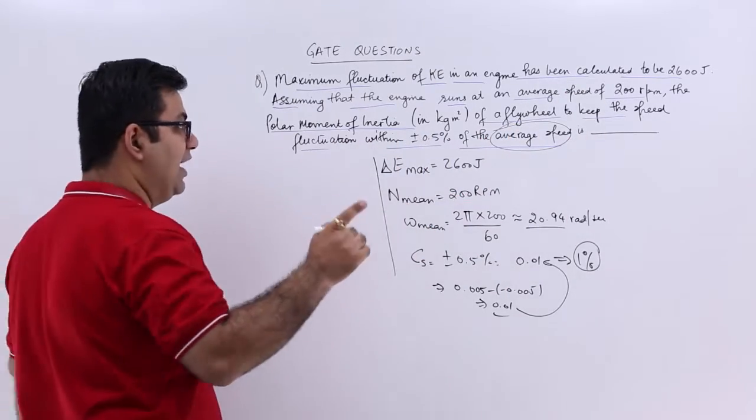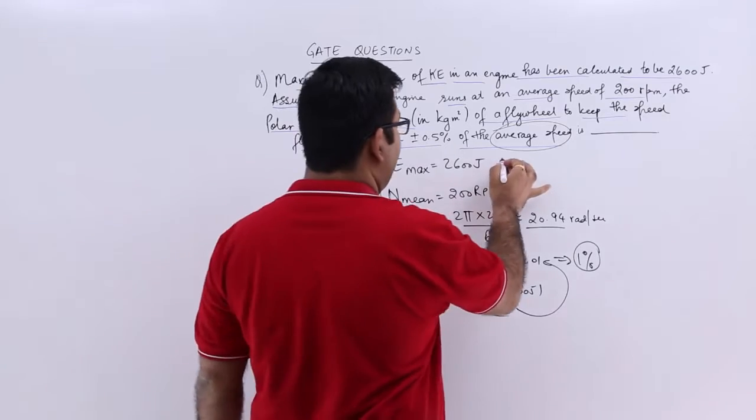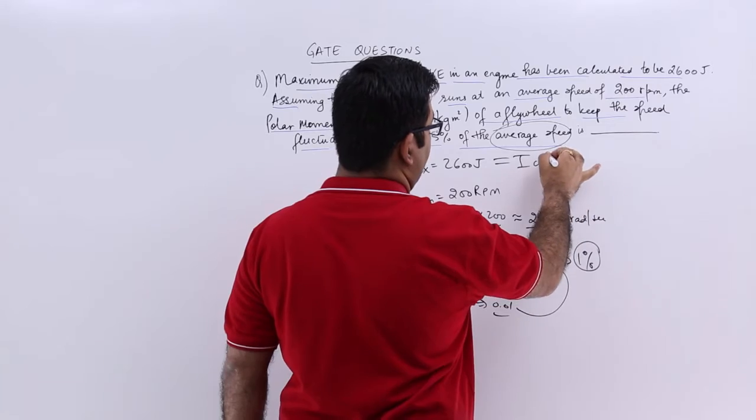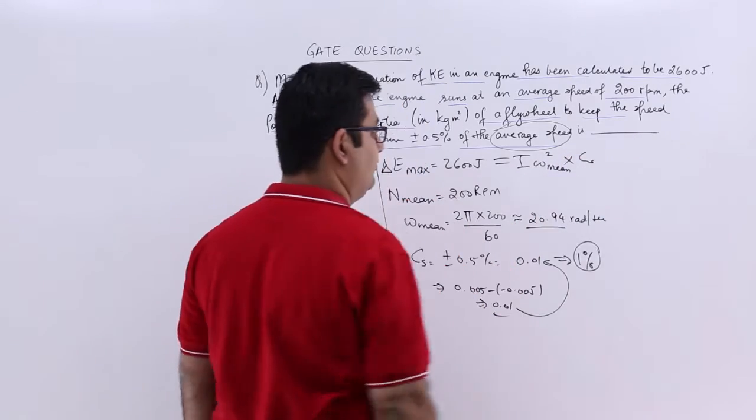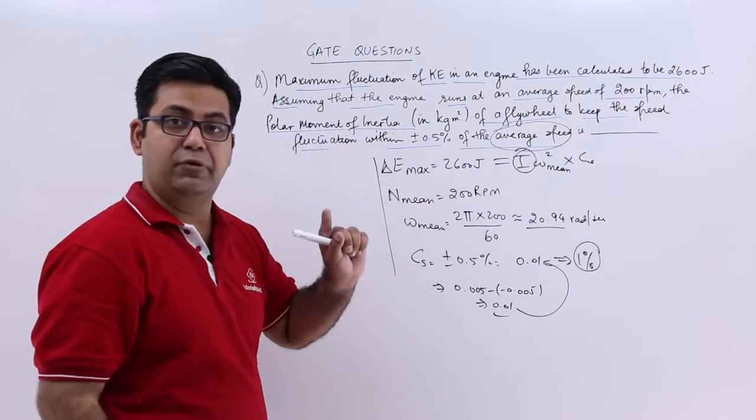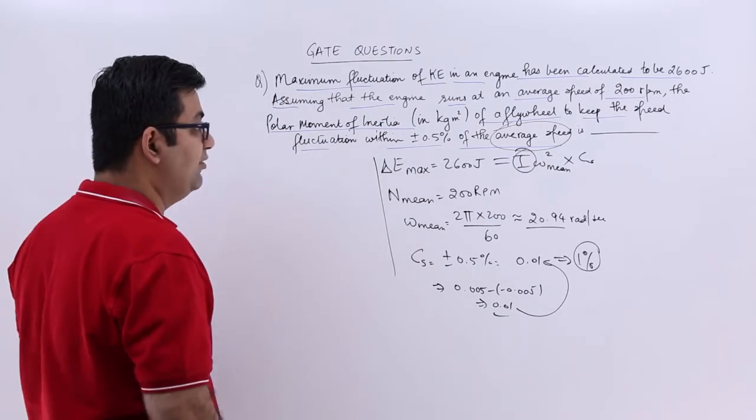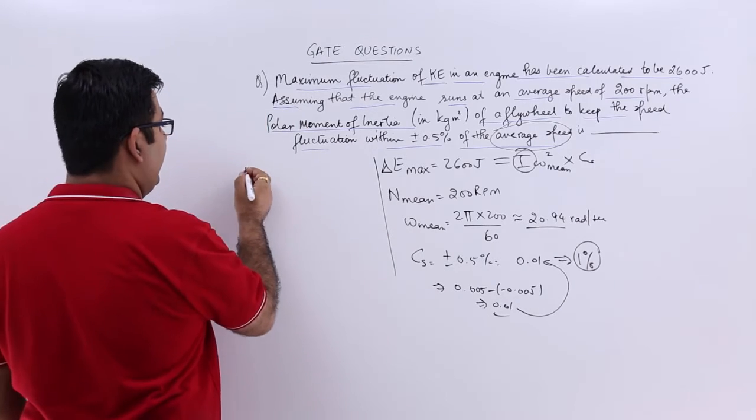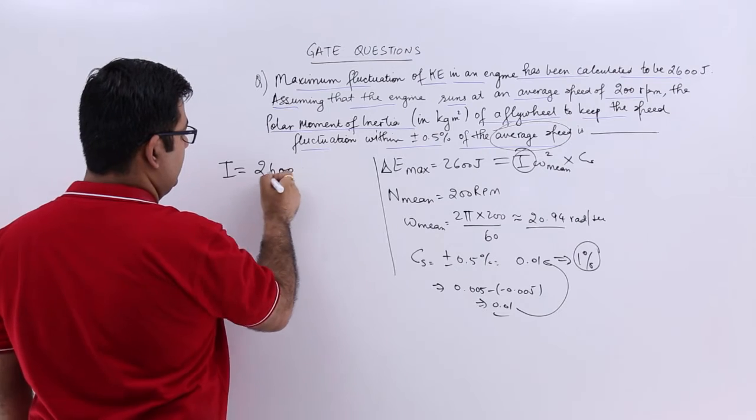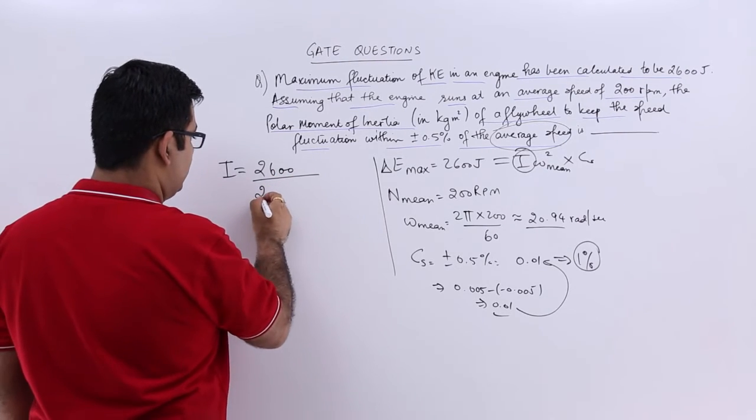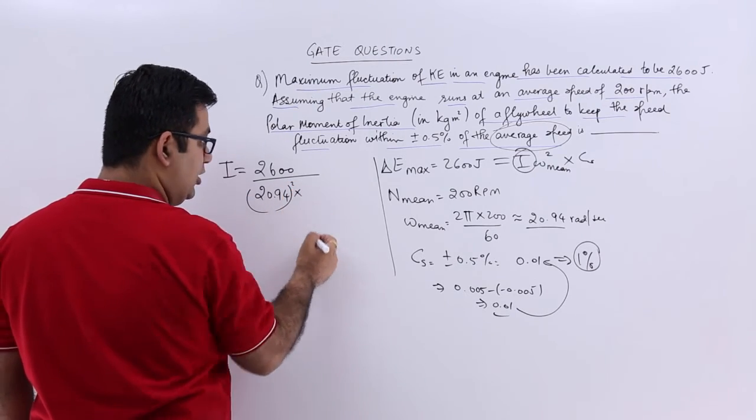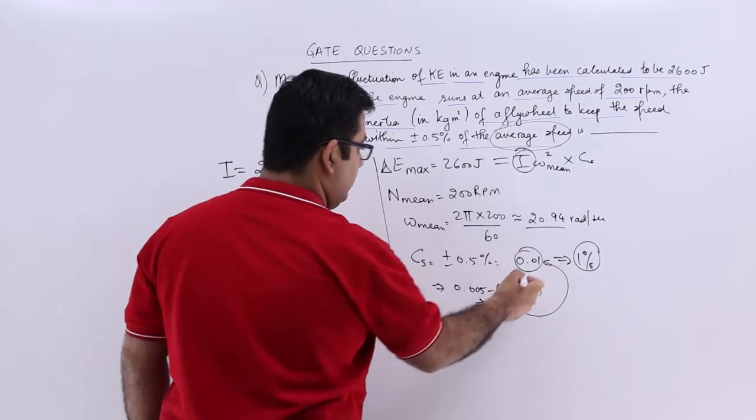The formula for delta E max is i × omega mean² × cs. From this equation I have to find out i, the polar moment of inertia. So you will have i as 2600 / (omega mean² × cs), that is 2600 / (20.94² × 0.01).